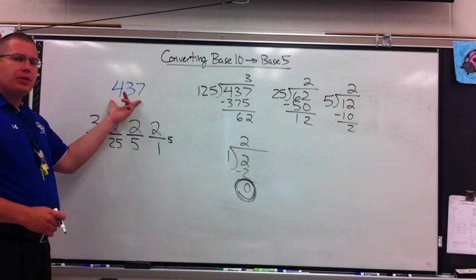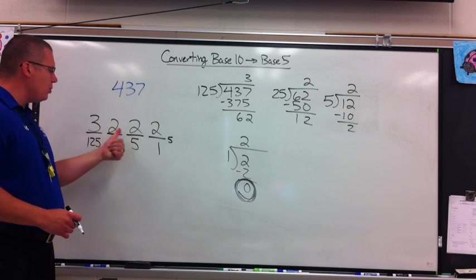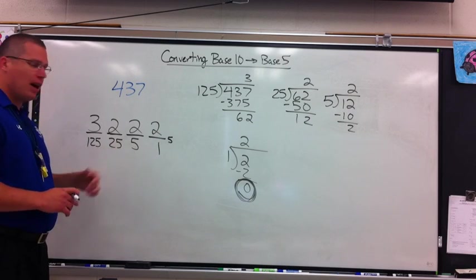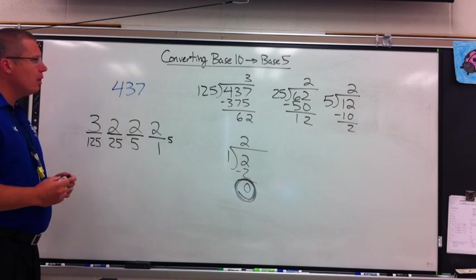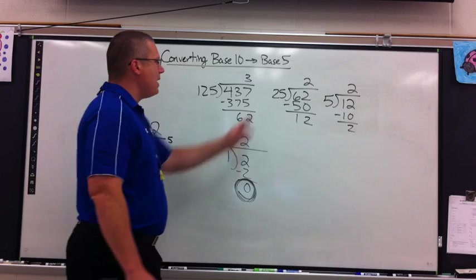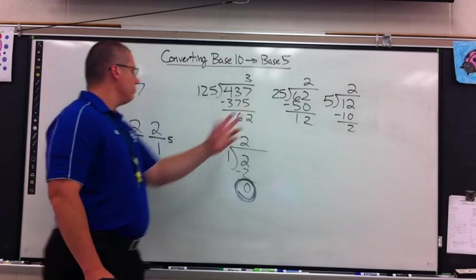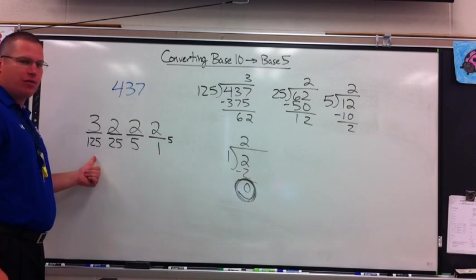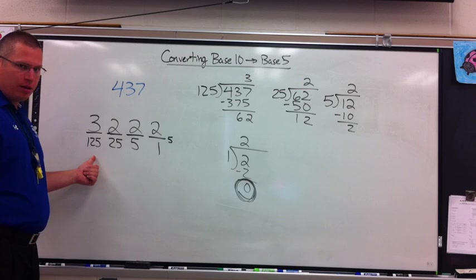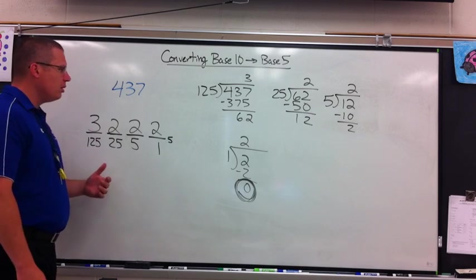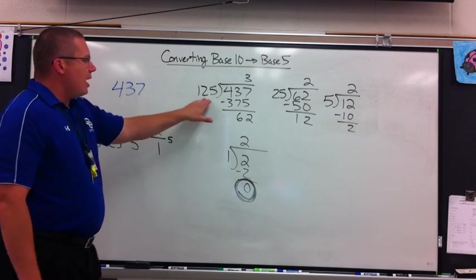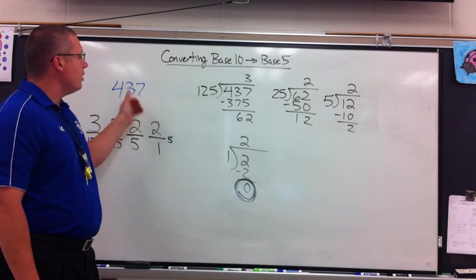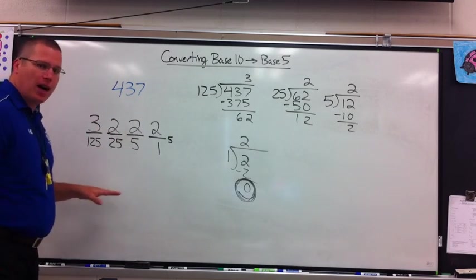So what is 437 base 10 equal to? It's 3, 2, 2, 2 in base 5 — that's my final answer. Last point: if it was base 7, then I would use base 7 place values — 1, 7, 49, 343, or whatever it is — and I would divide by those place values. This is converting base 10 into base 5.